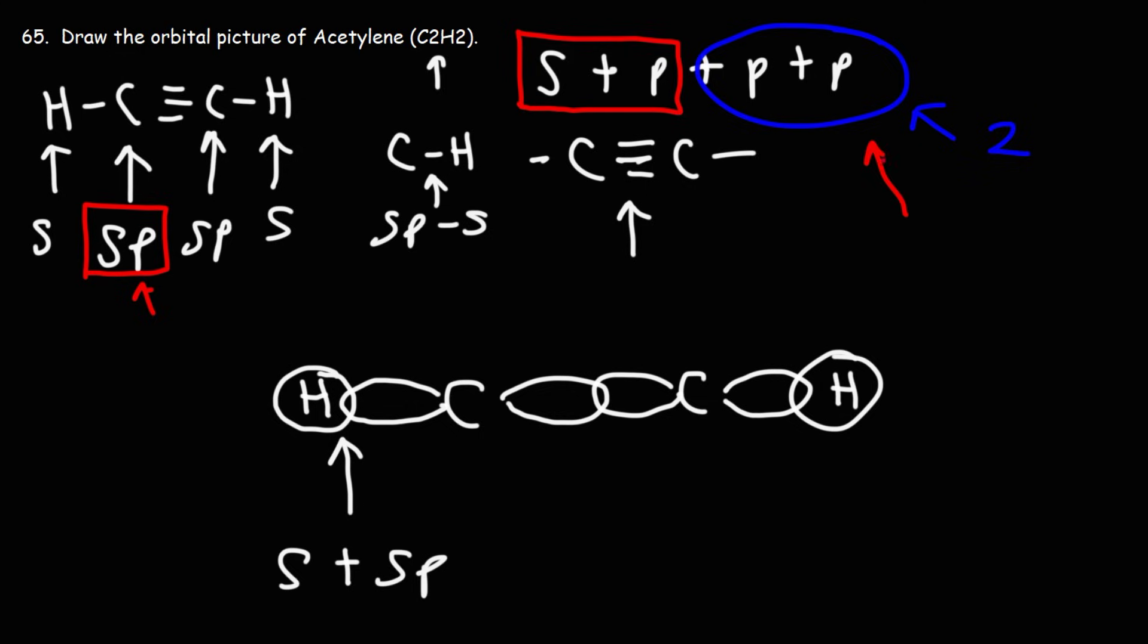Now, where are the empty p-orbitals? We have an empty p-orbital above and below the carbon atom.